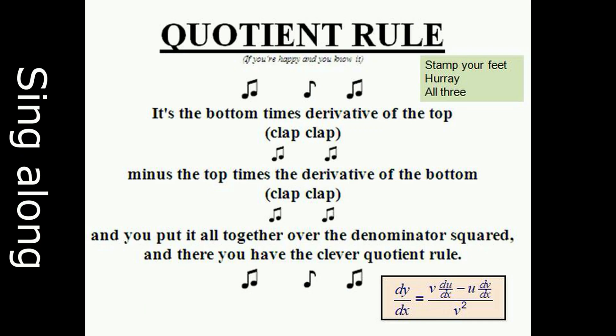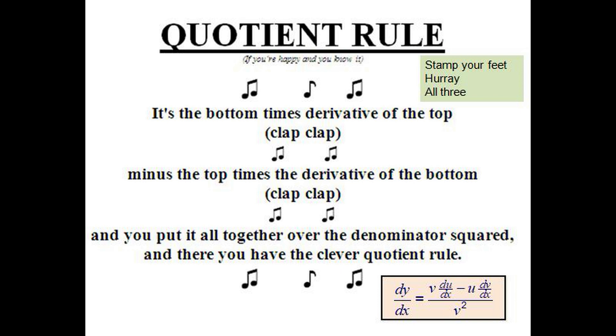It's the bottom times the derivative of the top, minus the top times the derivative of the bottom. And you put it all together over denominator squared. And there you have the clever quotient rule. Join in!